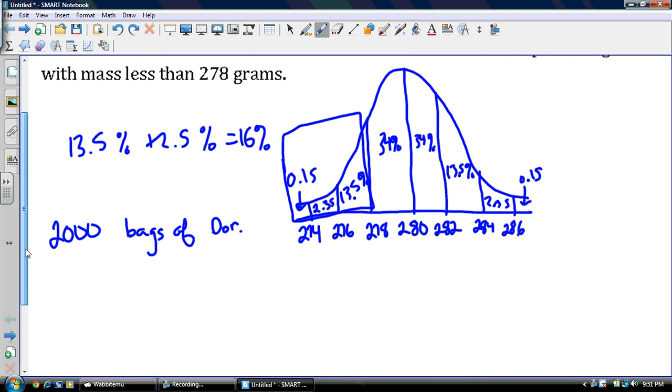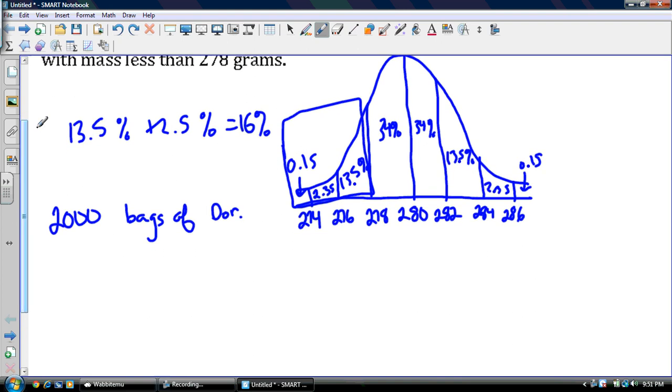So how many have a mass less than 278 grams? Well, I just figured out that's 16% of chips. So what I'm looking for is 16% of 2,000. So 16% of 2,000, well, that's just going to be 0.16 times 2,000.